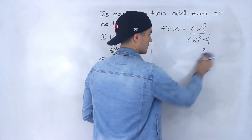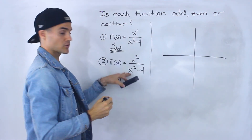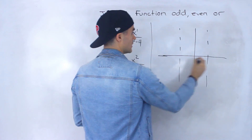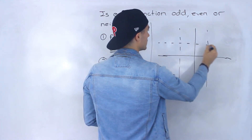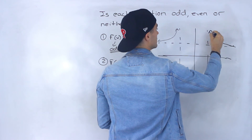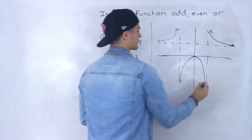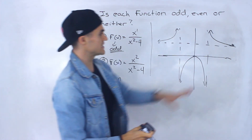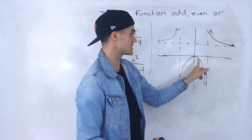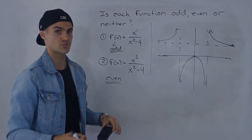If we graph this even function, we'll show in steps how to graph these kinds of functions in the rational functions chapter. There are vertical asymptotes at negative 2 and positive 2, and also a horizontal asymptote at 1. Notice that if we take one half and reflect it over the y-axis, we end up with the other half. You can visually see it's symmetric about the y-axis, so that function ends up being even.